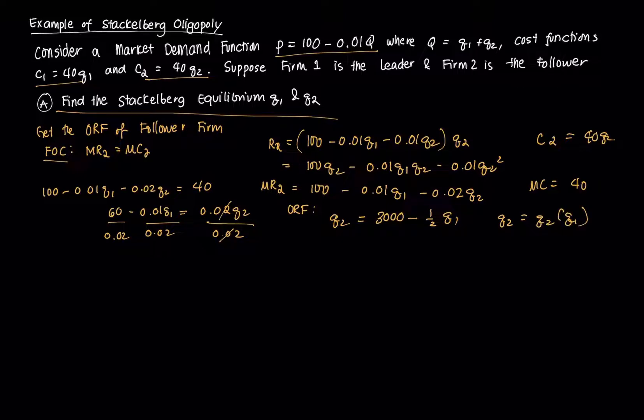Then what we're gonna do is we're gonna get Firm 1's residual demand curve. We do that by substituting Firm 2's ORF to the demand curve faced by Firm 1. So we get P equals 100 - 0.01Q1 - 0.01Q2. But we're gonna substitute the ORF, so this is gonna be 3000 - 1.5Q1. And if we solve this one, this will be equal to 70 - 0.005Q1. So this is the residual demand curve.